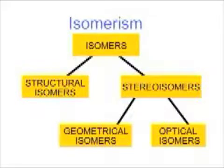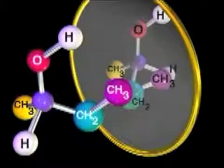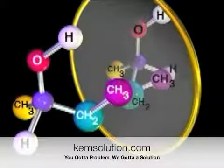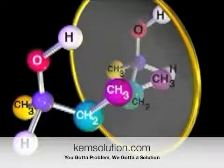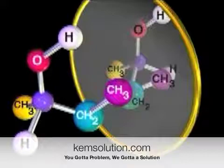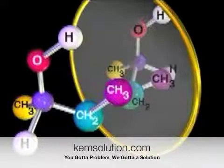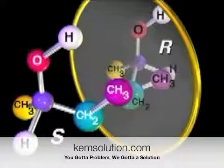Optical isomers have the same groups of atoms arranged in the same relationship to one another. But because the molecule lacks a center of symmetry, they are not superimposable upon one another. Optical isomers are mirror images of one another. This example shows secondary butyl alcohol, one of the isomers of butanol. Notice that all four groups attached to the central carbon are different. As a result, the molecule in the foreground is not superimposable on its mirror image. The two optical isomers are distinguished by the letters R and S. Molecules such as this are called chiral.